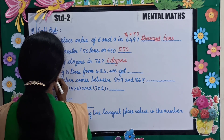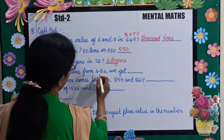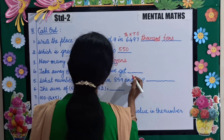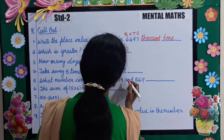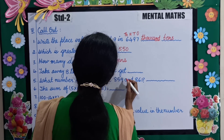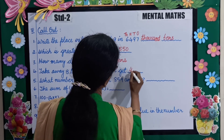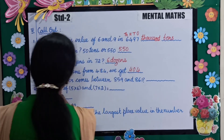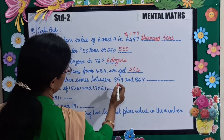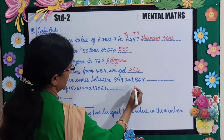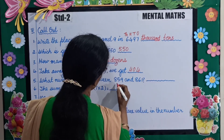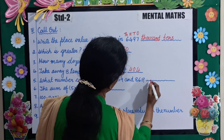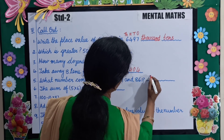Number 4: take away 8 tens from 484. 8 tens means 80. So what is the answer? 404. Next: what number comes between 859 and 861? The answer is 860.